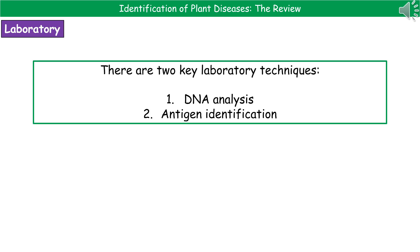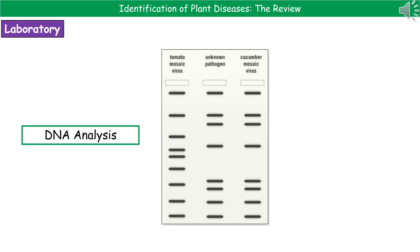The alternative to identification in the field is using a laboratory. There are two key lab techniques to identify the pathogen causing the problem. The first is DNA analysis and the second is antigen identification. Considering DNA analysis first, all living things have a unique genome — and that includes plant pathogens — meaning they have a unique set of DNA. We can use a process called DNA fingerprinting to identify what pathogen we have based on the DNA present.